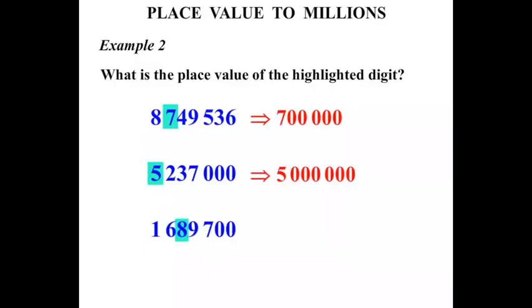One million, six hundred and eighty-nine thousand, seven hundred. The eight is highlighted — what is it worth? Well, we go ones, tens, hundreds, thousands, ten thousands. We've got eight lots of ten thousand, and that is worth eighty thousand.